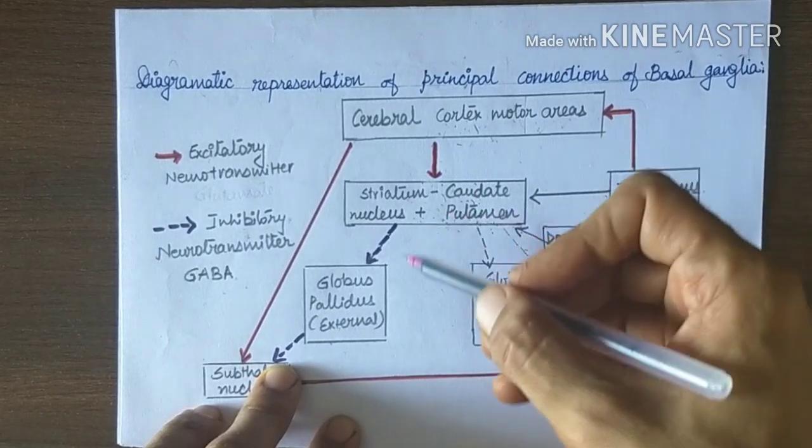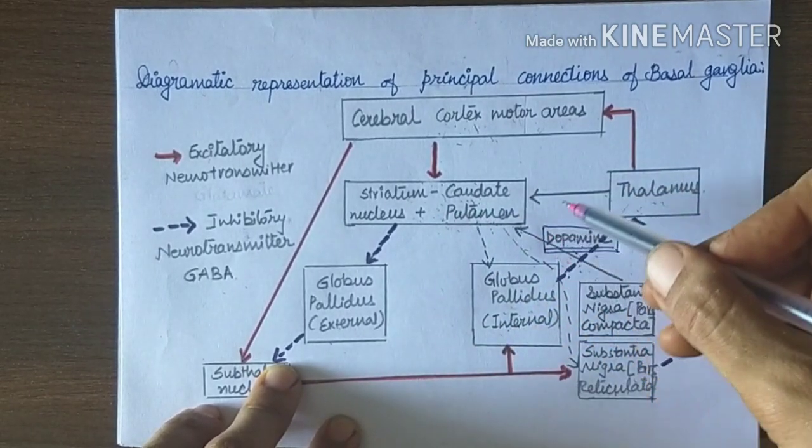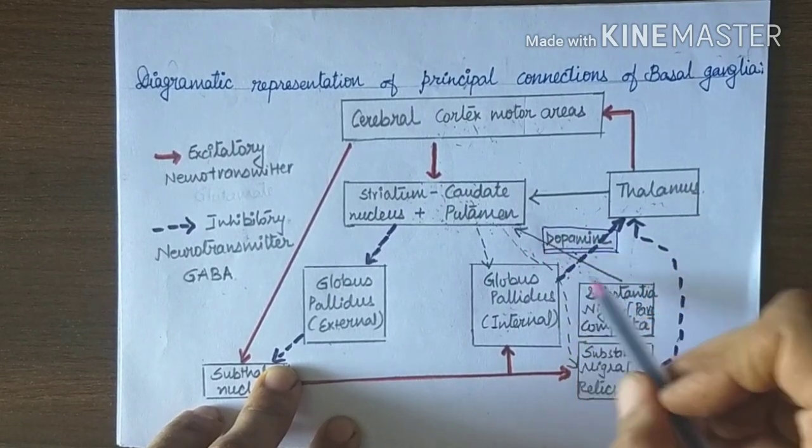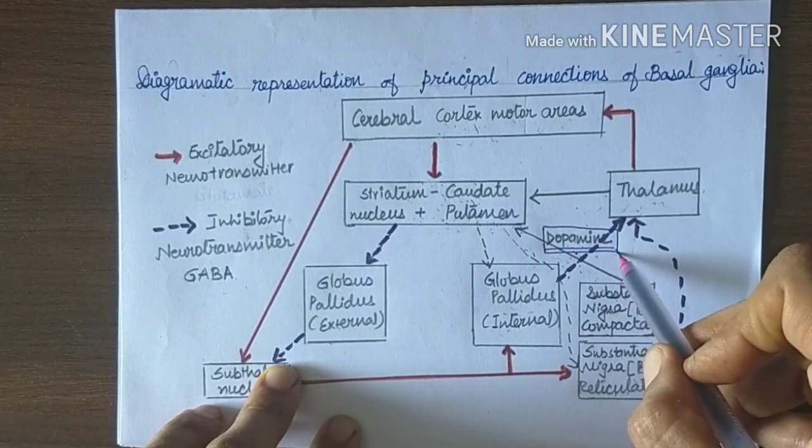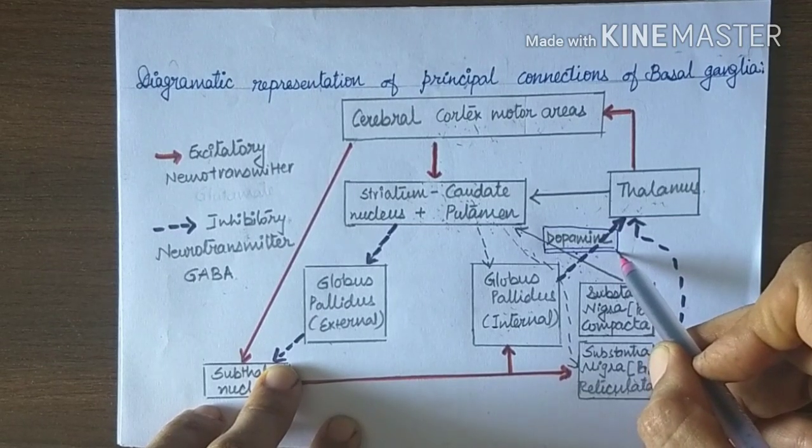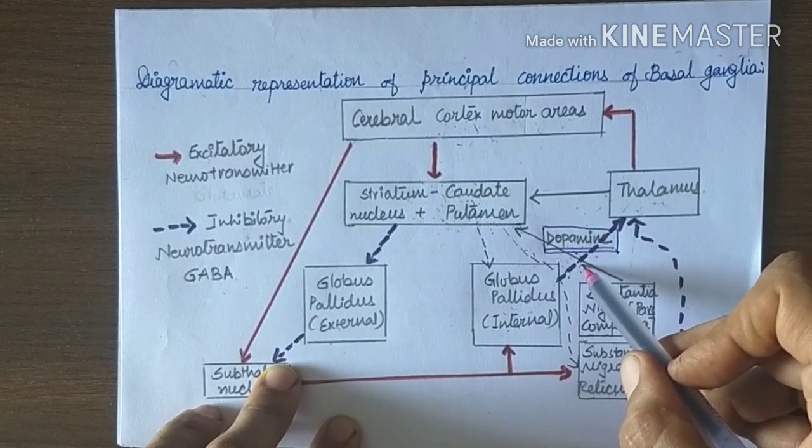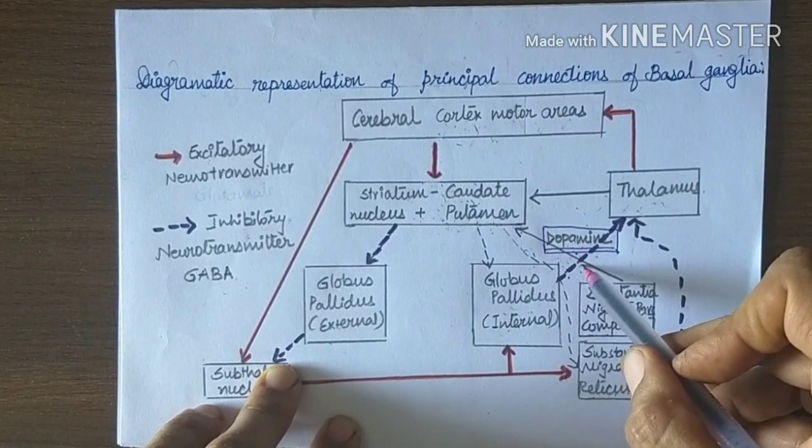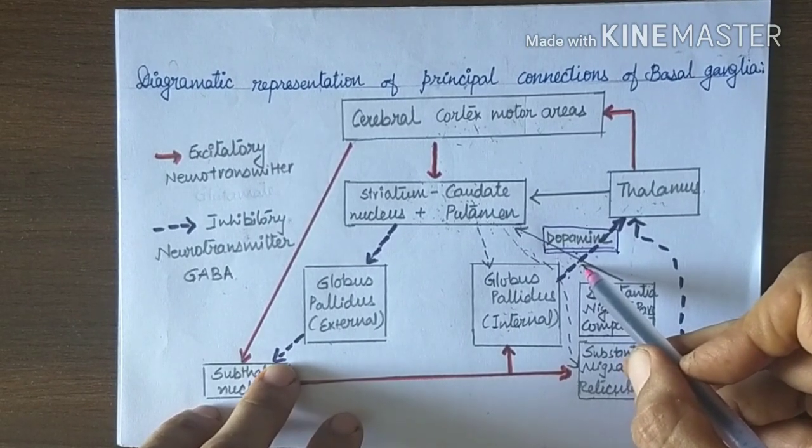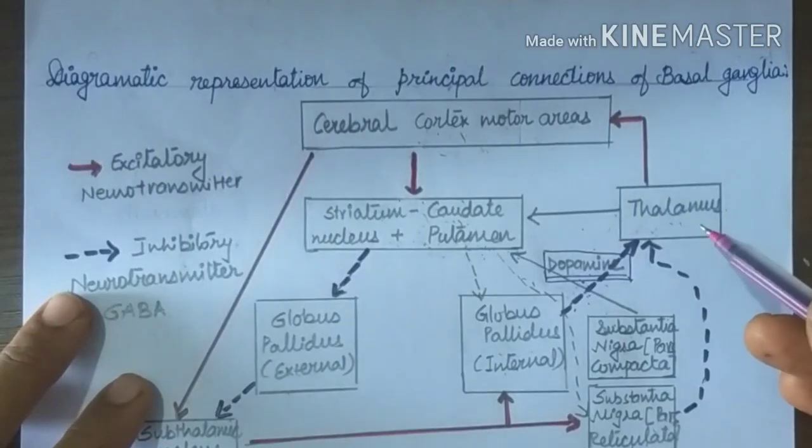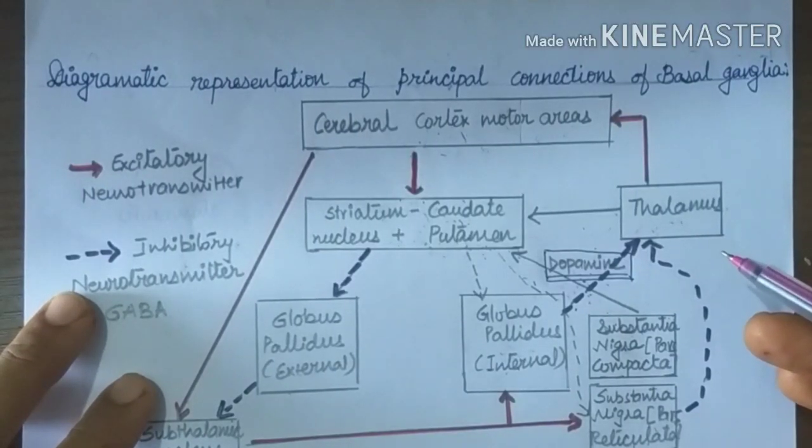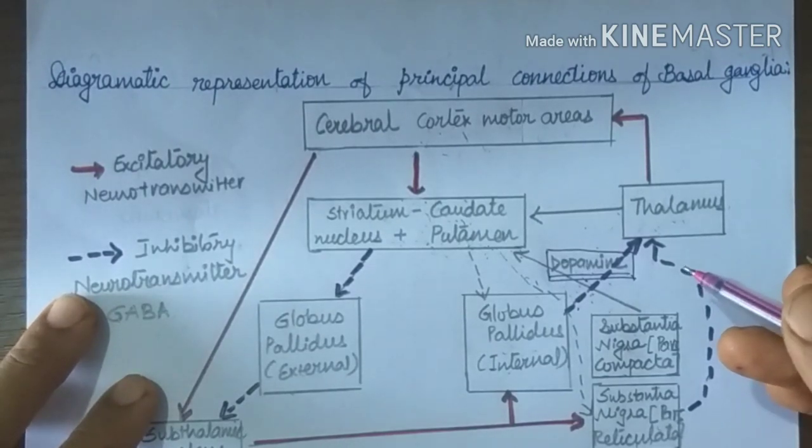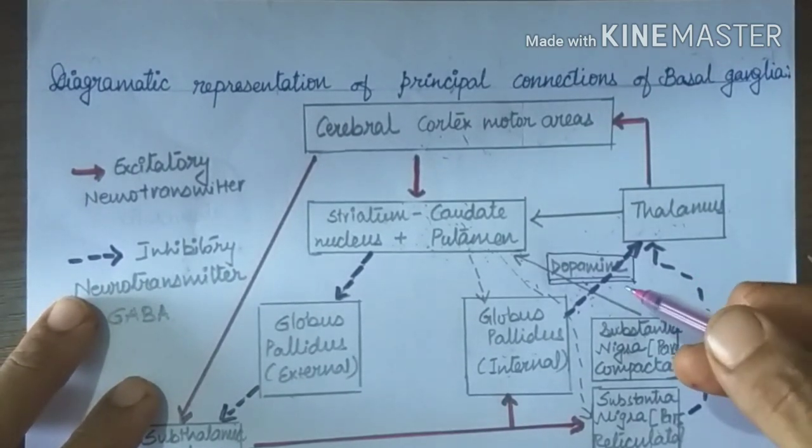Normally, inhibitory output from the basal ganglia is kept in check by these inhibitory dopaminergic fibers. Because of loss of these dopaminergic fibers, the circuit gets disturbed and that results in various symptoms of Parkinson's disease. As we have discussed, Parkinson's is a neurodegenerative disease and it is due to degeneration of dopaminergic neurons.